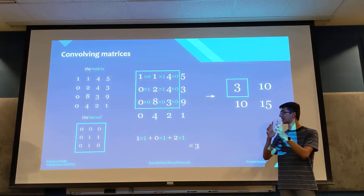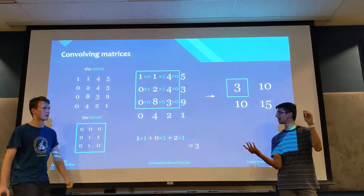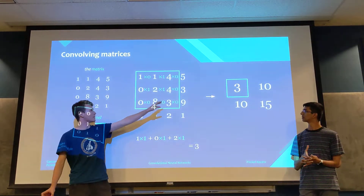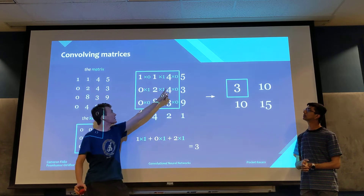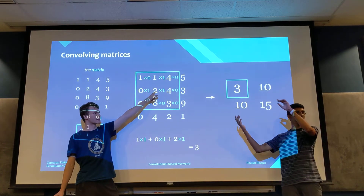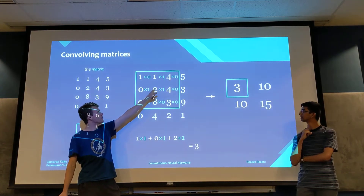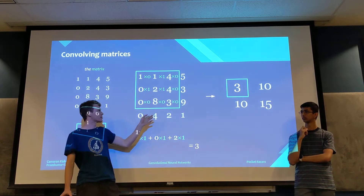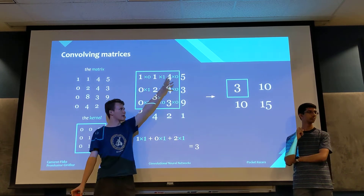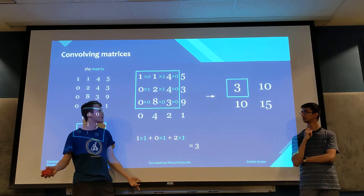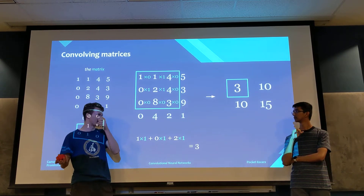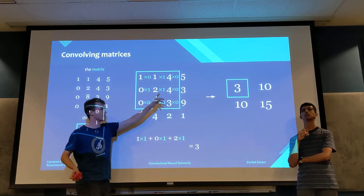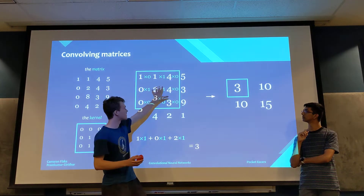If the kernel is even-dimensioned, there's not a one-to-one correspondence between the pixels in the original and new image. There are ways to handle this — usually you'd pad the image with extra values using various techniques. But basically, for image processing purposes, we want kernels with odd dimensions.